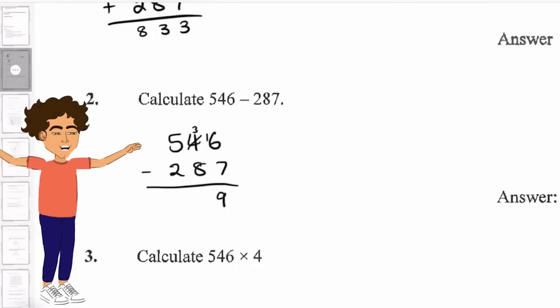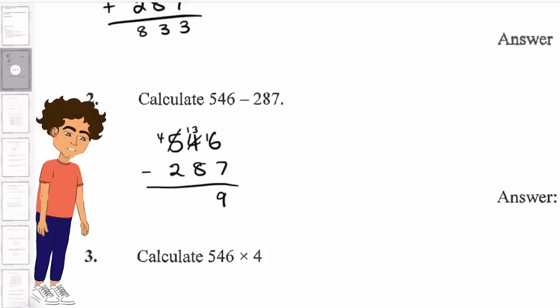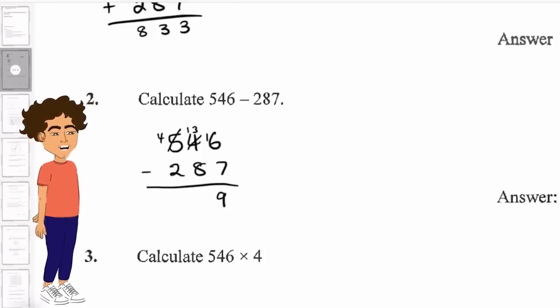Over to the tens position. Again, we can't do 3 take away 8. So we cross out the 5 that becomes a 4 and 1 goes in front of the 3, which makes it a 13.